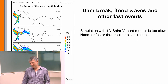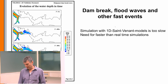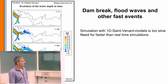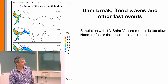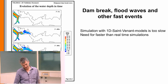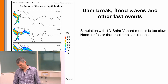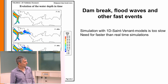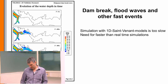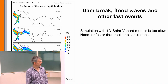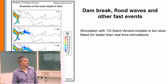Another application where we need such a model is a dam break or a flood wave. Here is a very famous dam break in France simulated with the Telemac system. We can see the dam break and the wave propagating through the system after 200 seconds, 400 seconds, and 600 seconds. We want to simulate this kind of event one-dimensionally; a two-dimensional model can also show the spatial extent of flooding, but that is not possible with a one-dimensional model.